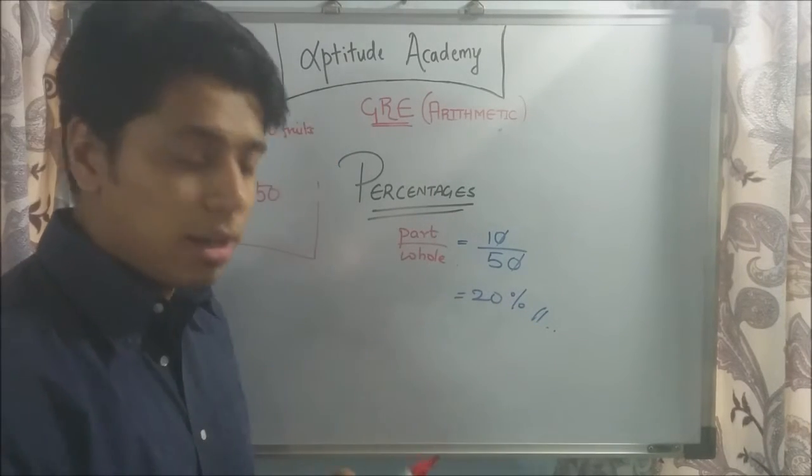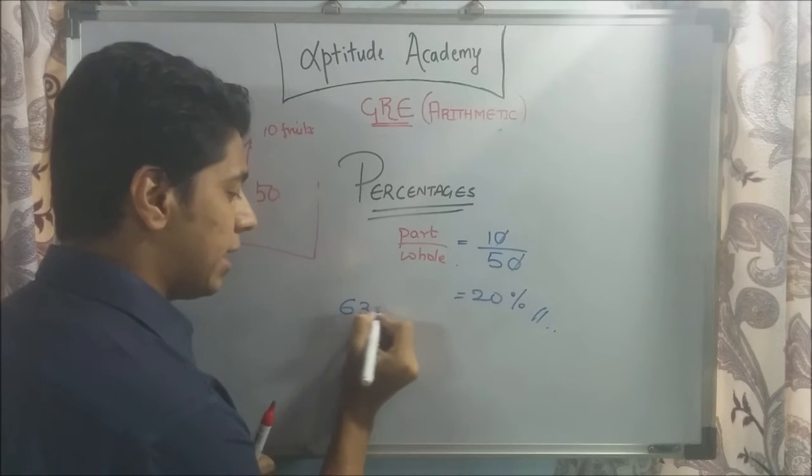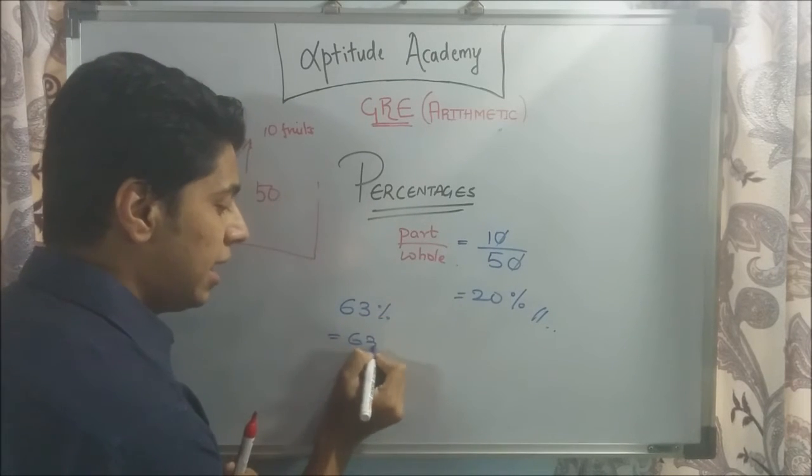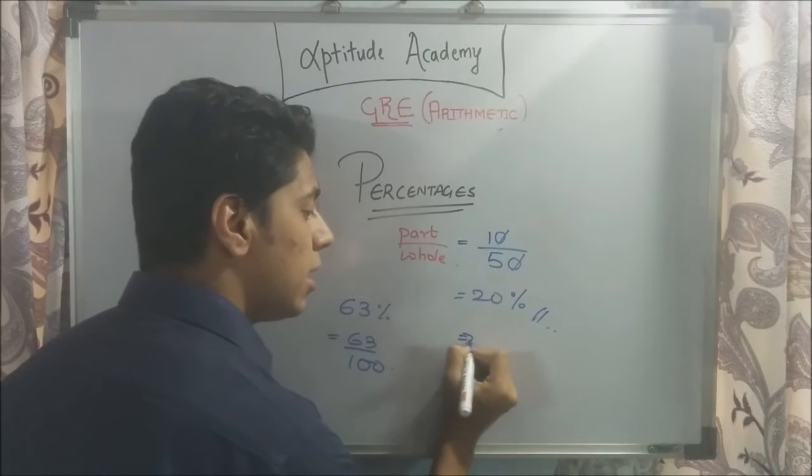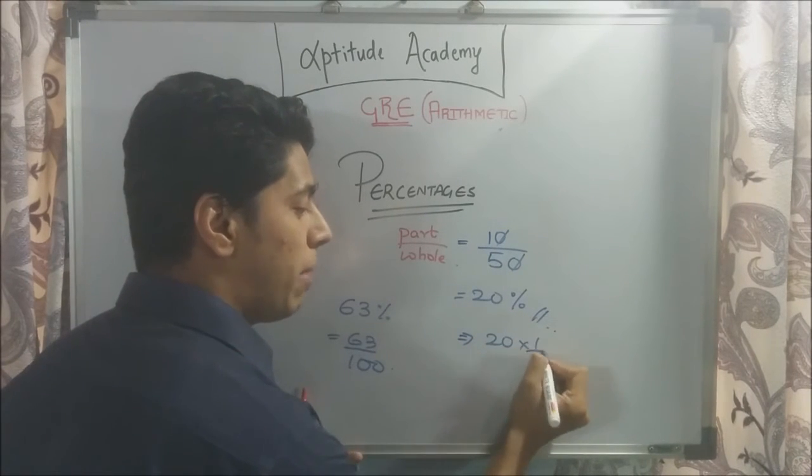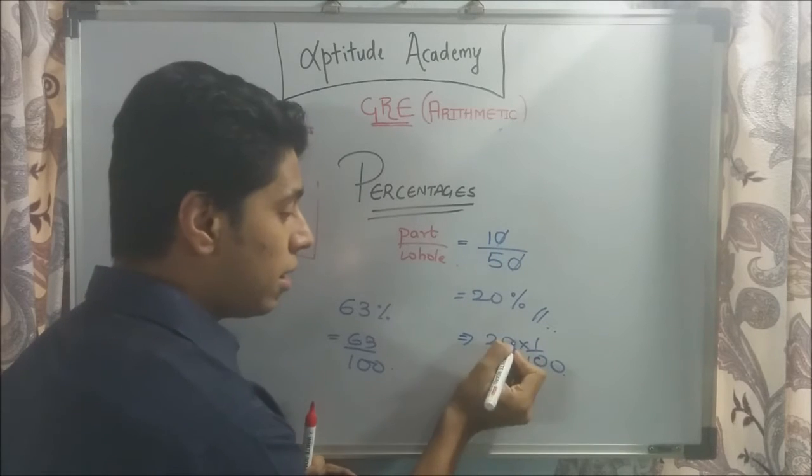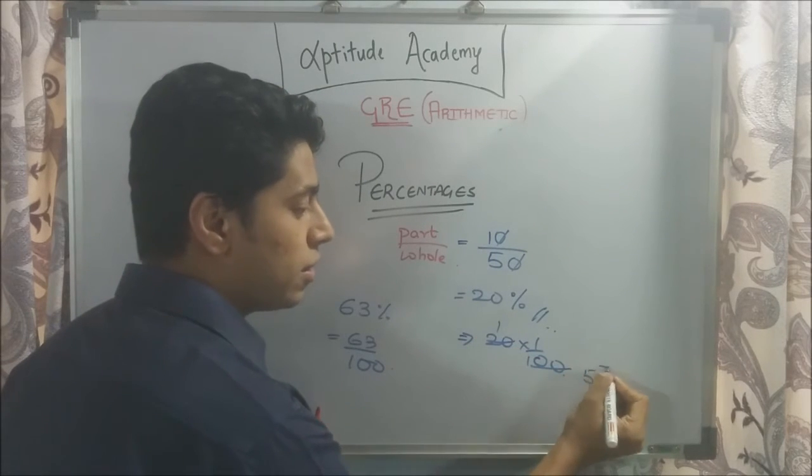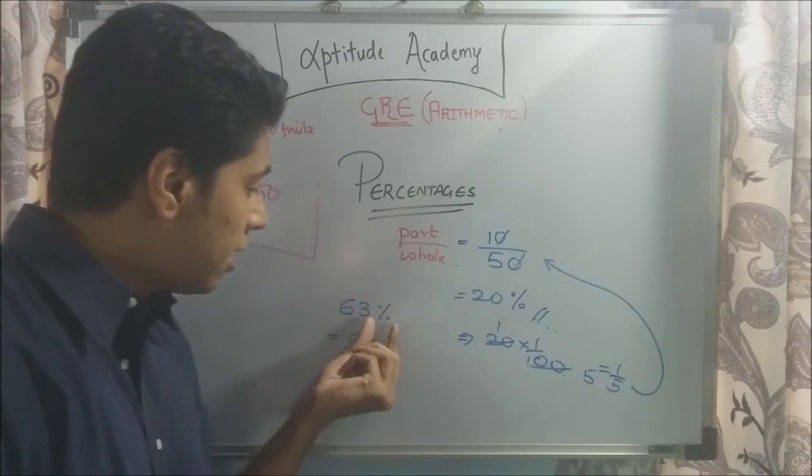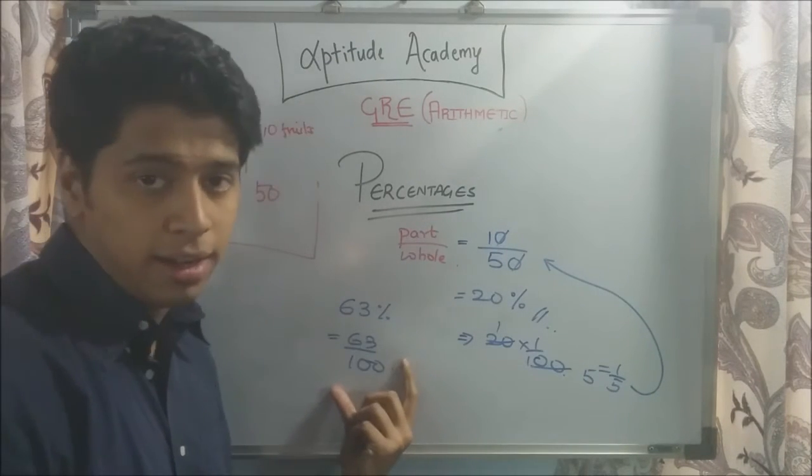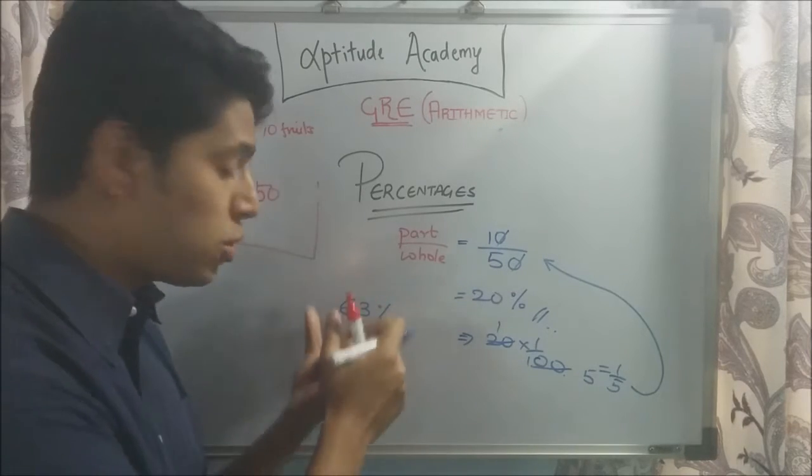Now, when you see a number that says, say 63%, it basically means 63 divided by 100. So, this will be 20 into 1 by 100. 1's up, 5's up. Which is 1 by 5, which is exactly what we got here. So always, replace the percentage sign by 1 by 100. And that's how you get a percentage to a fraction.